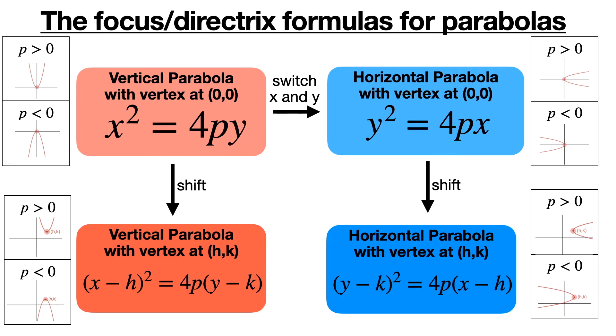The results of all of these considerations is that if we use all of our knowledge of shifts and reflections, then we can start off with the equation x² = 4py. And by shifting it, we get the general equation for the vertical parabola. And by reflecting, we get the horizontal parabola equation, y² = 4px.